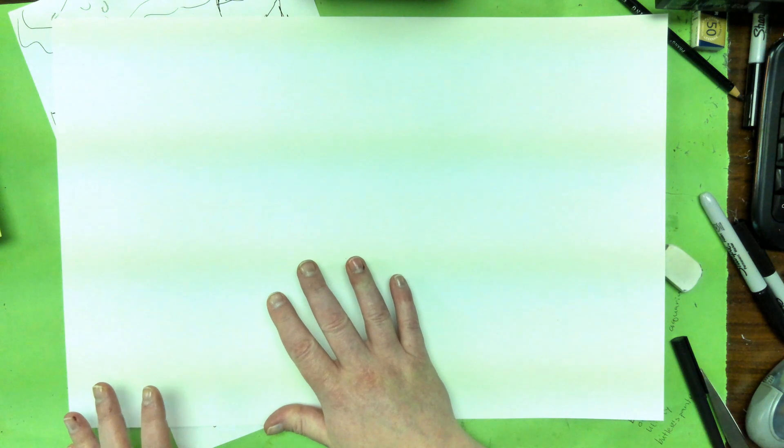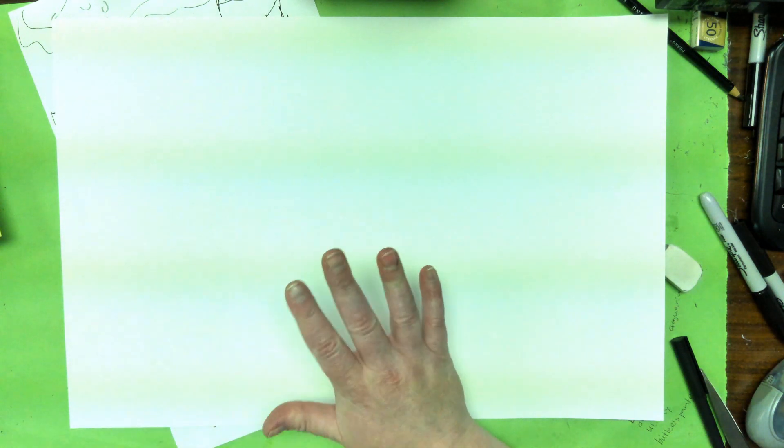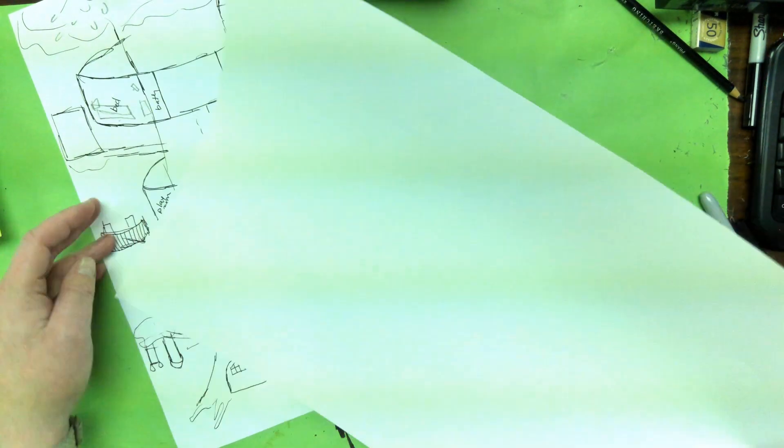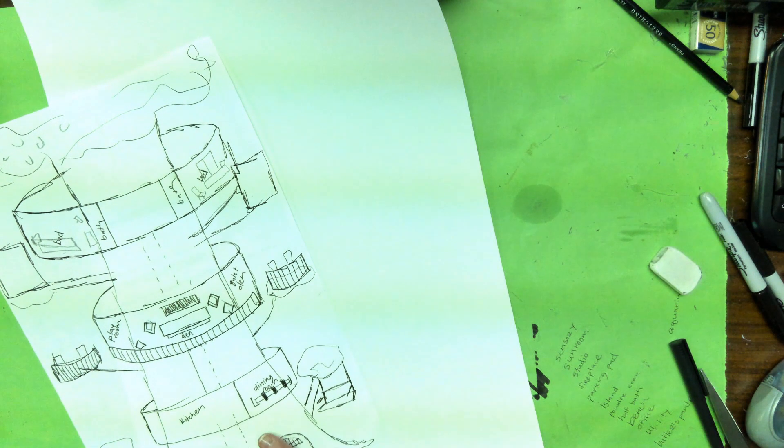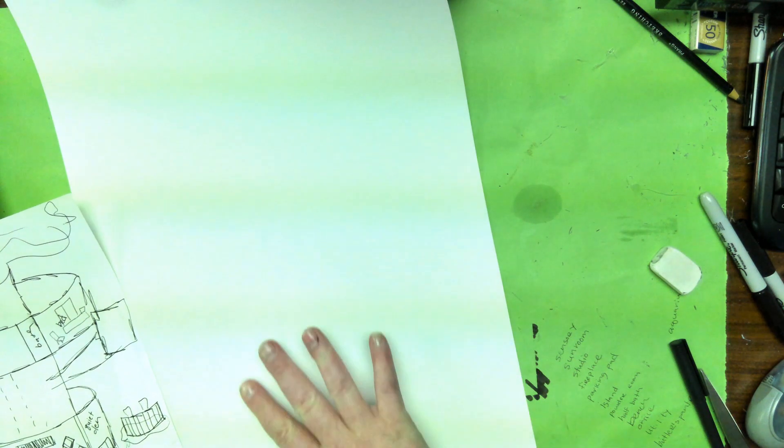So this is big. It's 12 by 18. It's bigger than anything you normally work with. And then what you're going to do is you are going to draw your house from your draft so that it fills the entire paper.